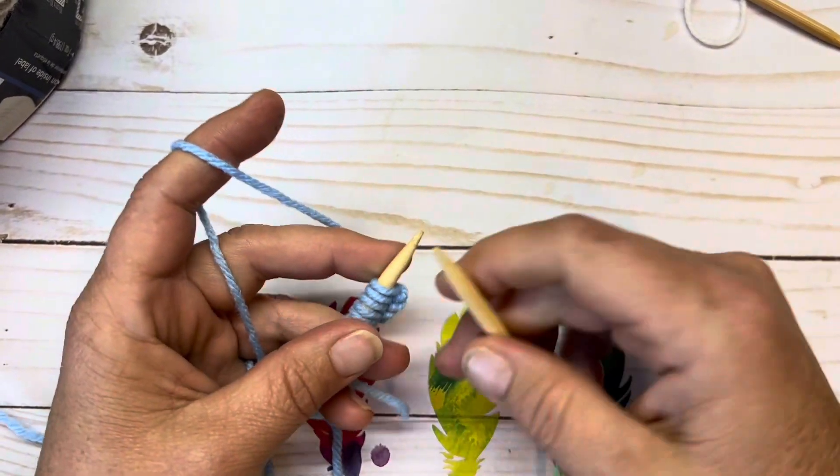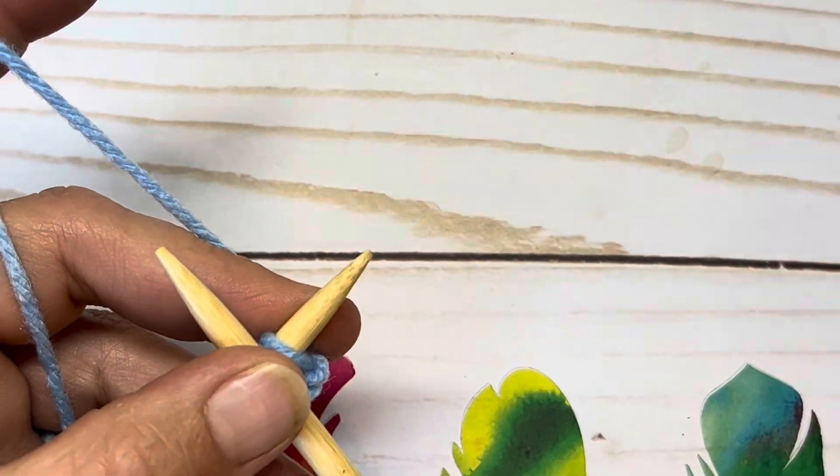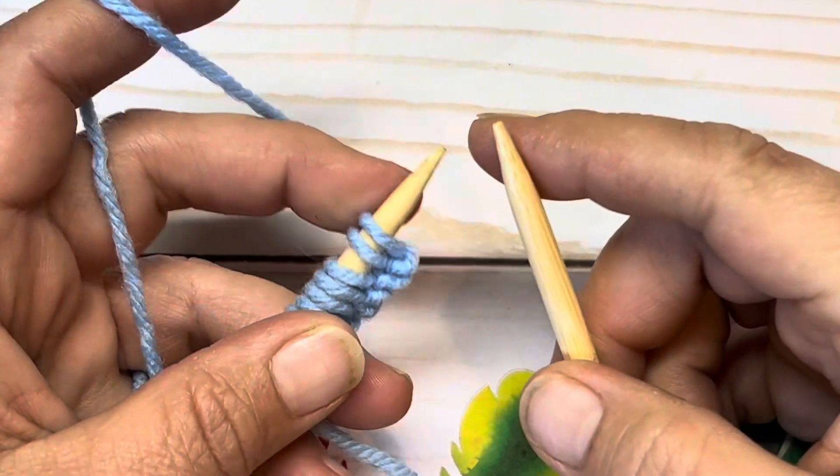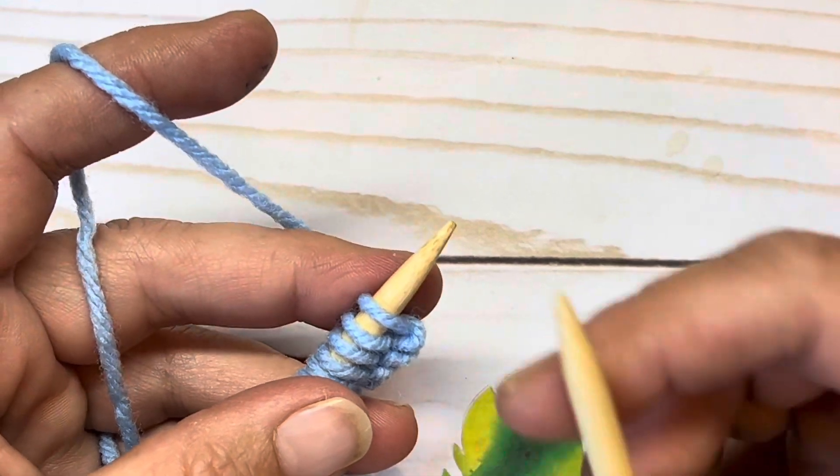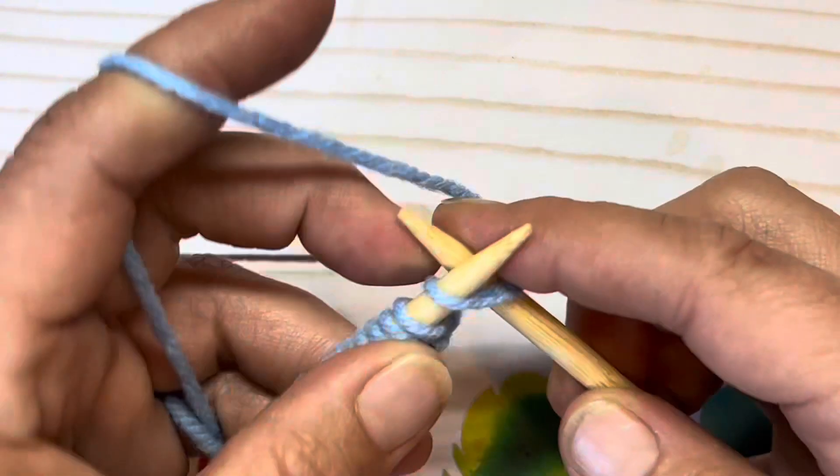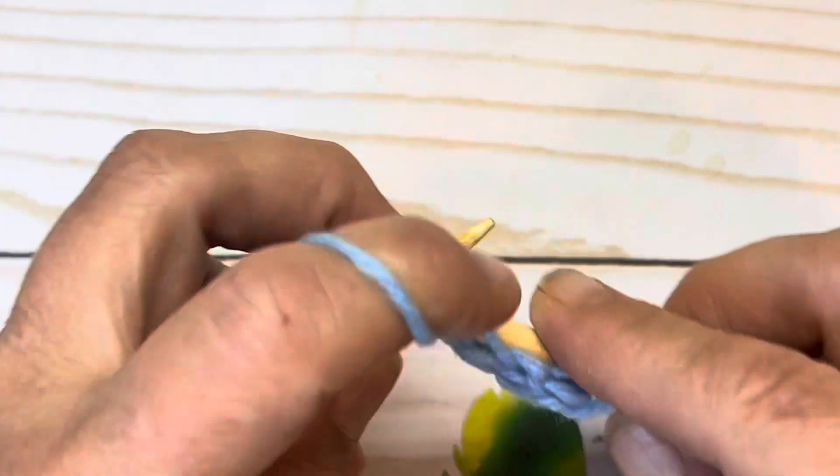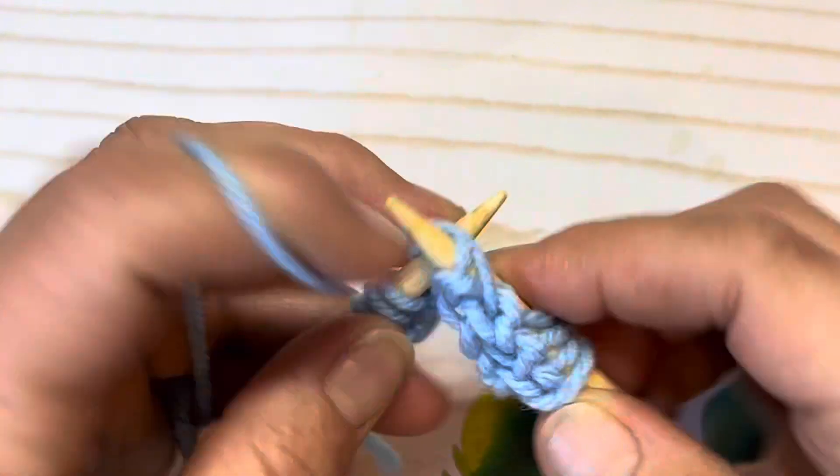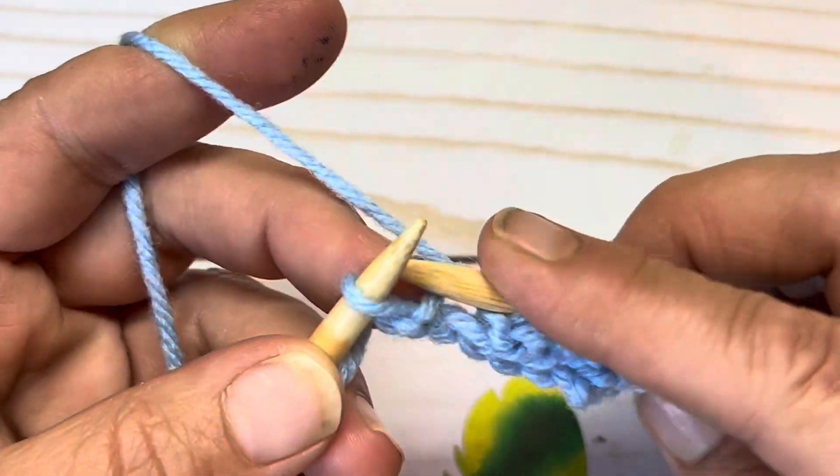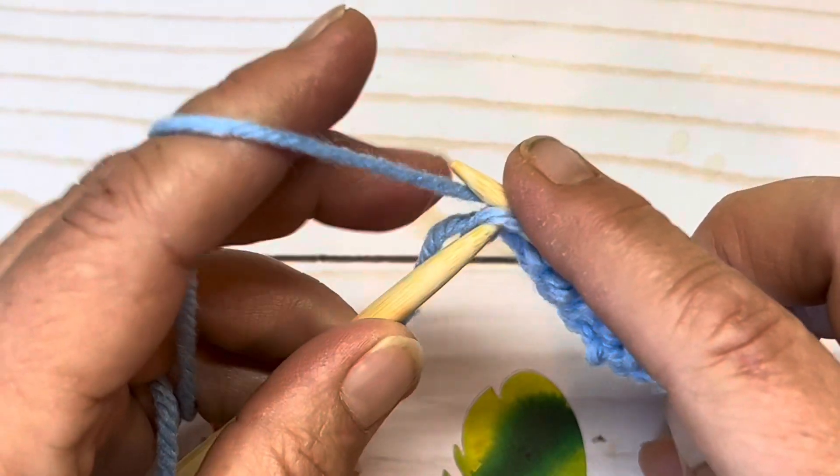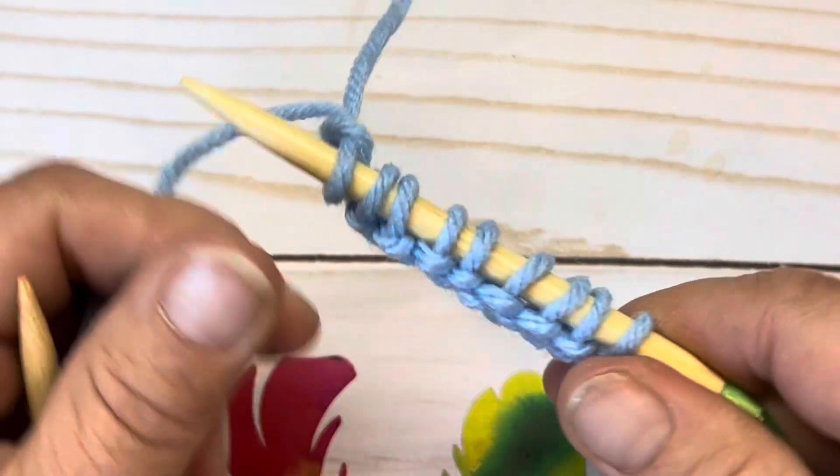So we do a setup row to begin with, and I'm going to zoom in so we can get up close and see what's going on. The setup row is on the wrong side of the work. We knit one, purl seven - one, two, three, four, five, six, and seven - and then knit one. That is our setup row.